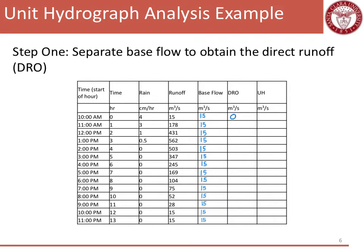In the second hour, we had 178 observed, so we're going to subtract out 15 and get 163 CMS. I'm going to go ahead and fill in the rest of this table. There is the direct runoff, which is just the runoff minus the base flow. We are now done with that first step and we can move on to the second step.